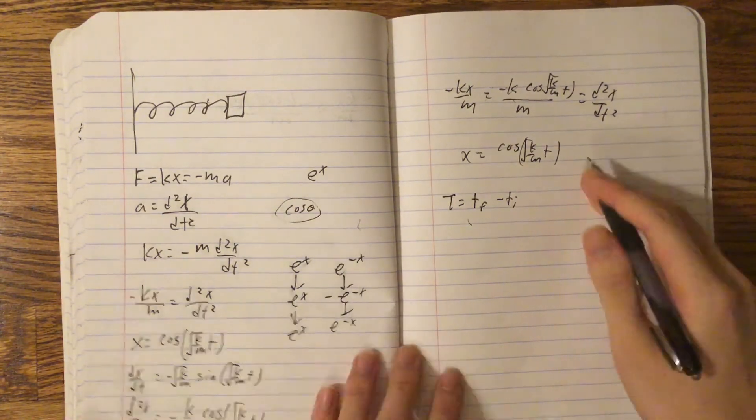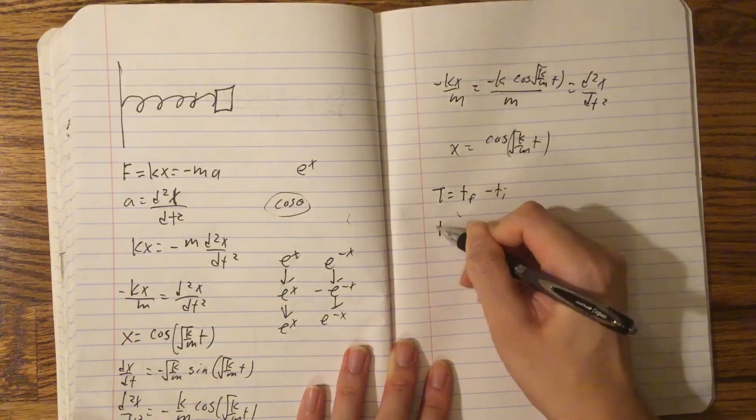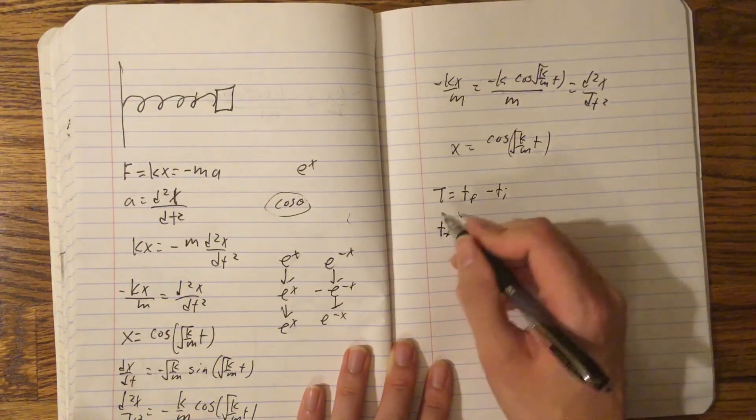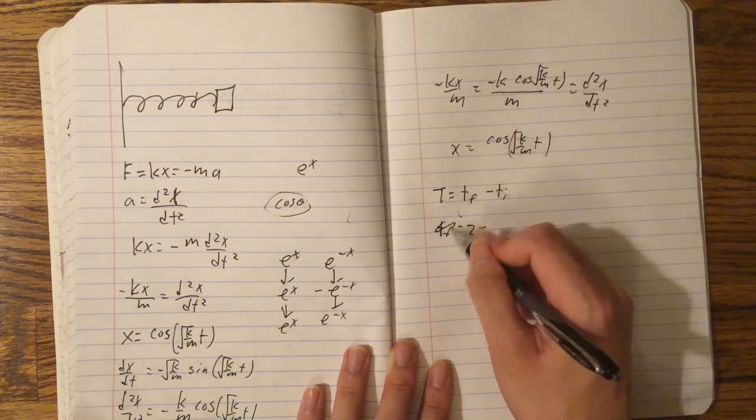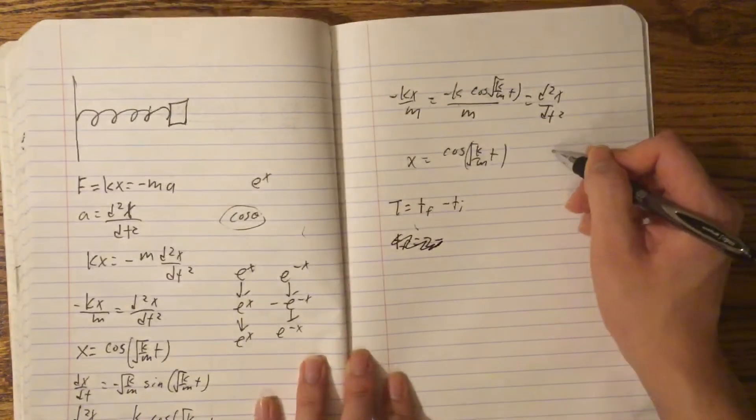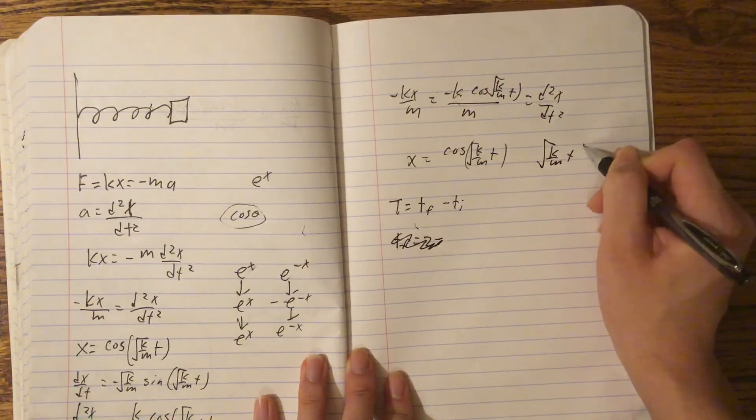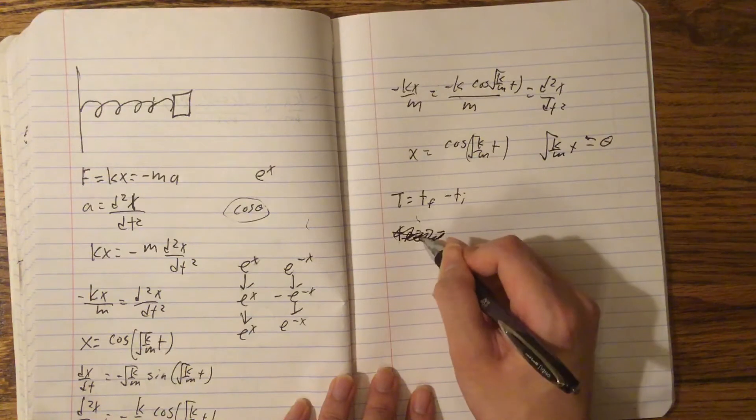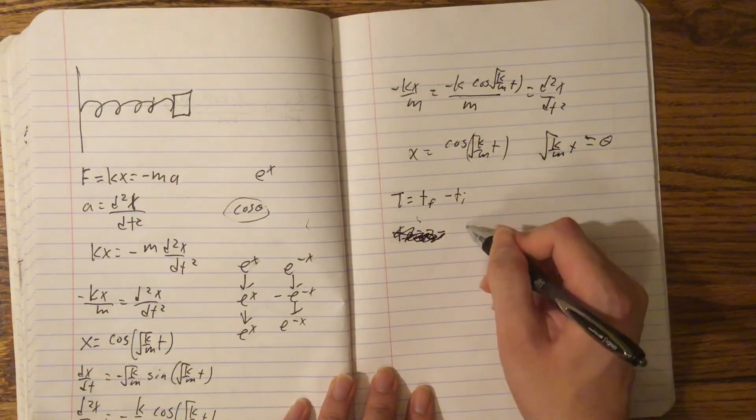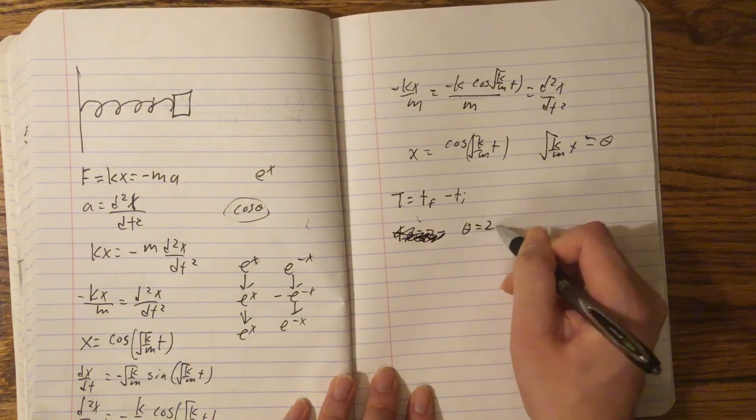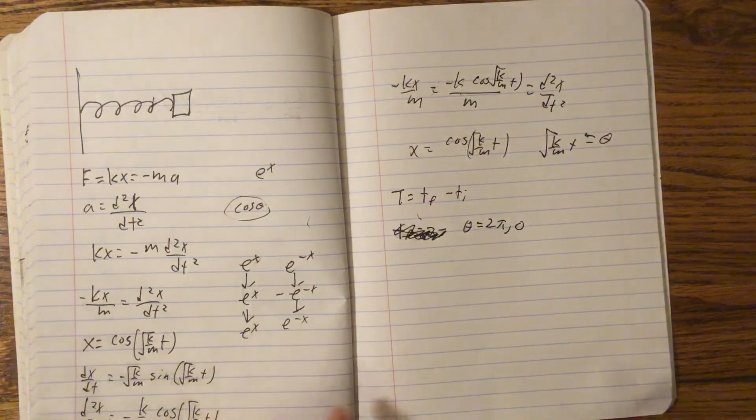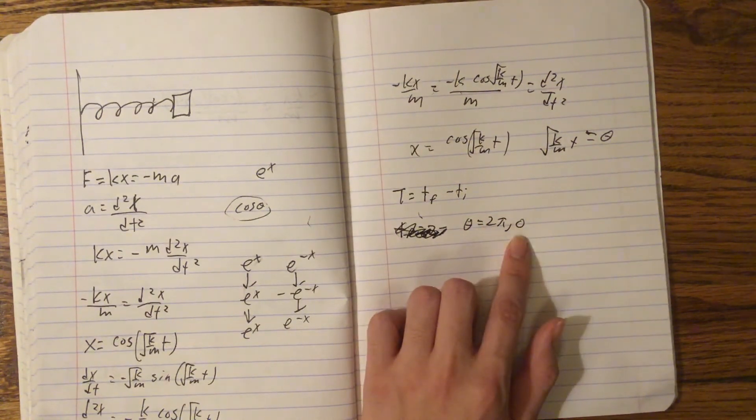Well, an easy way to do it is just let's say root k m t equals theta for a moment. Let's just say it's a theta. So, then, we can have theta equal to 2pi and 0, because 2pi is a full period, and 0 is the start of that period. So, we want this function to go through 0, and then to 2pi.